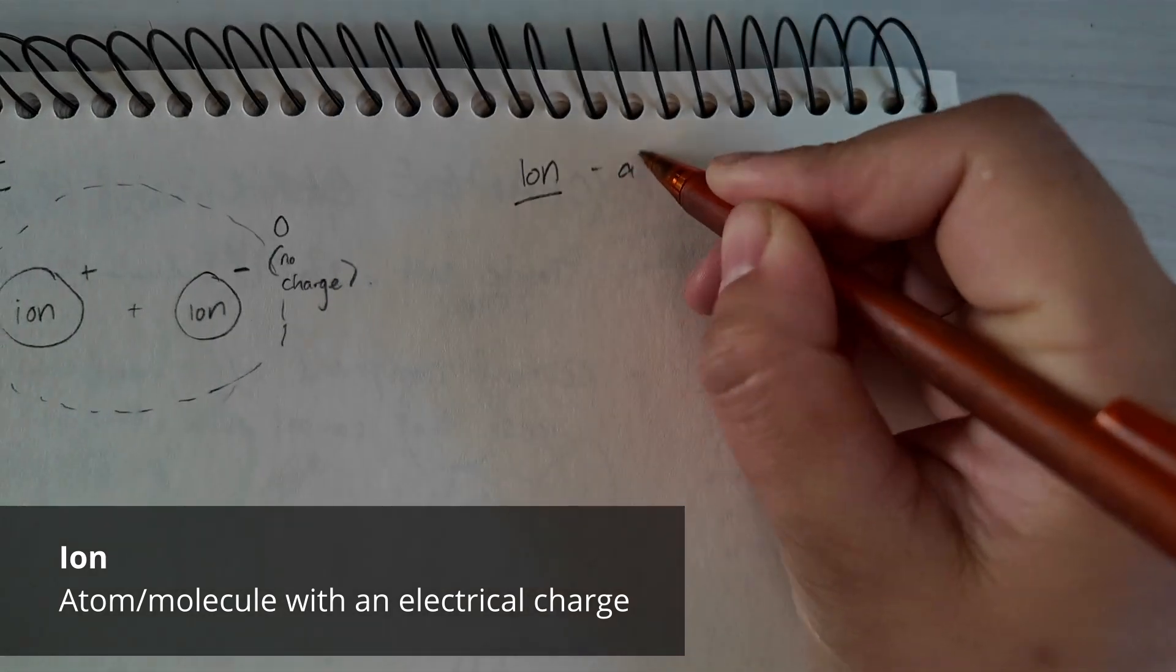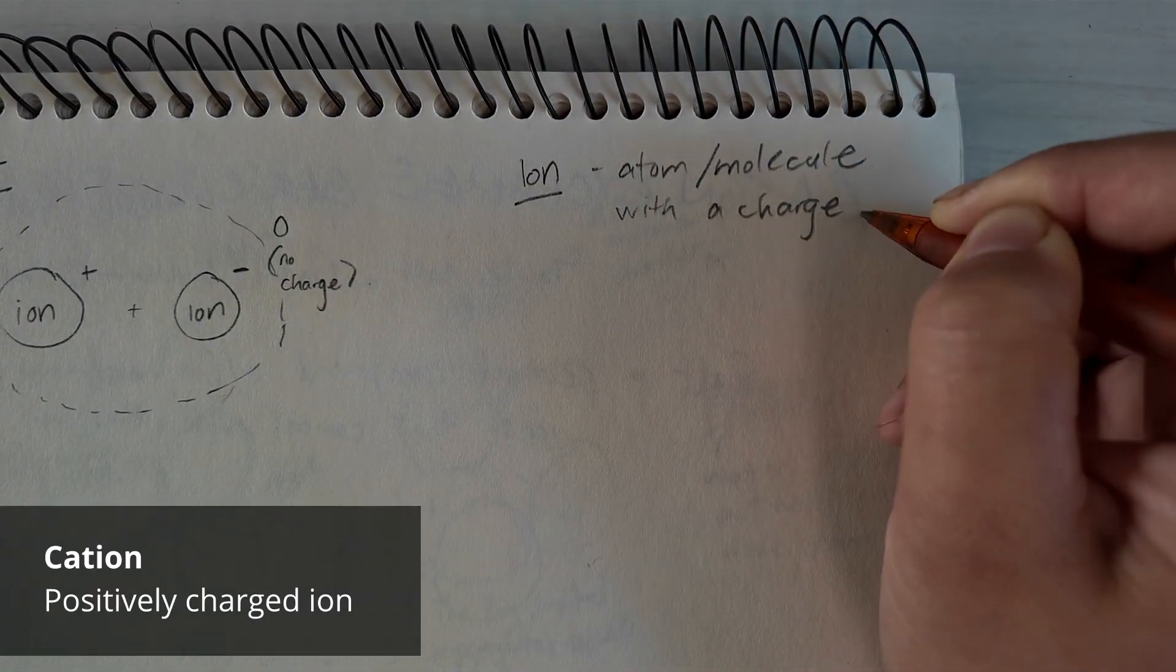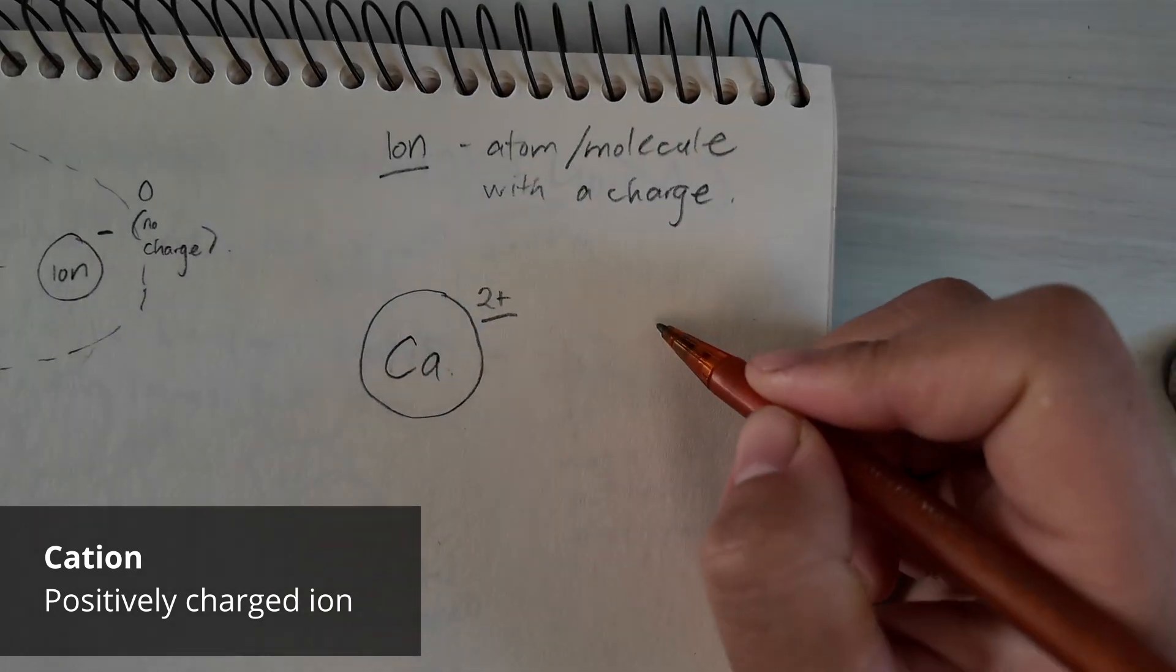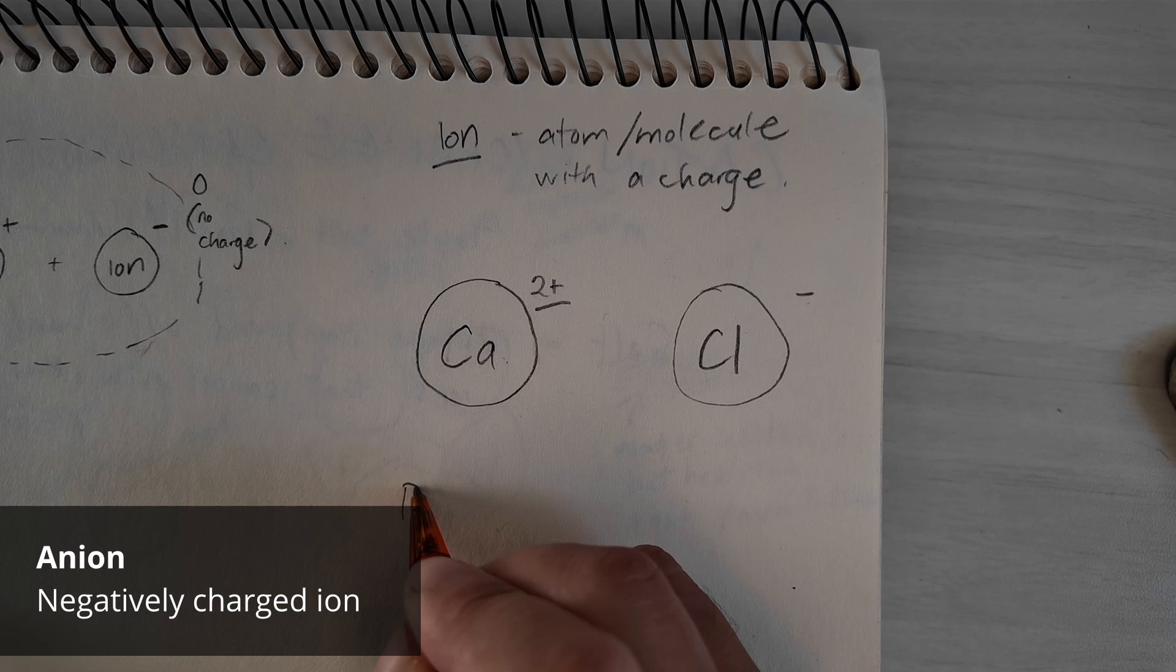It's just an atom or a molecule that has some kind of electrical charge to it. The positively charged ion is called a cation, and the negatively charged ion is called an anion.